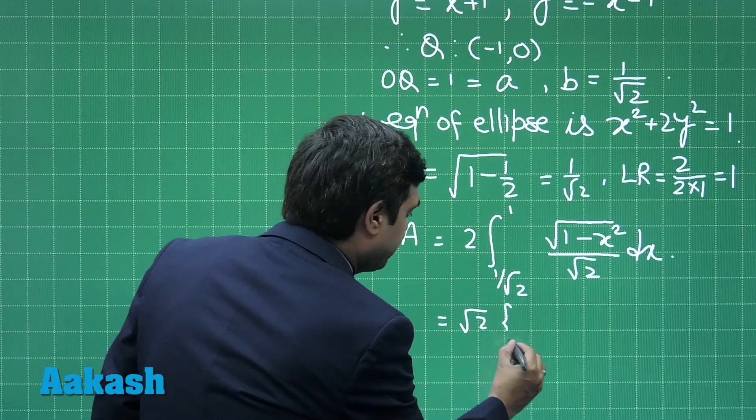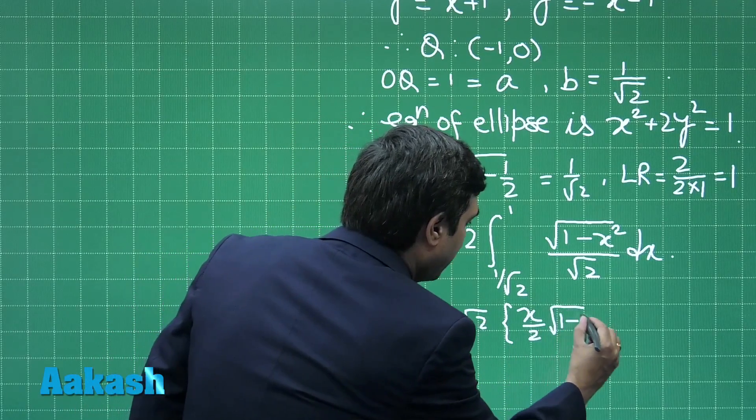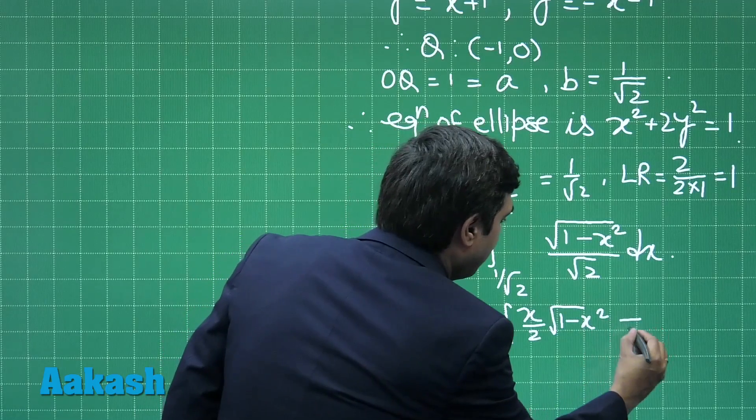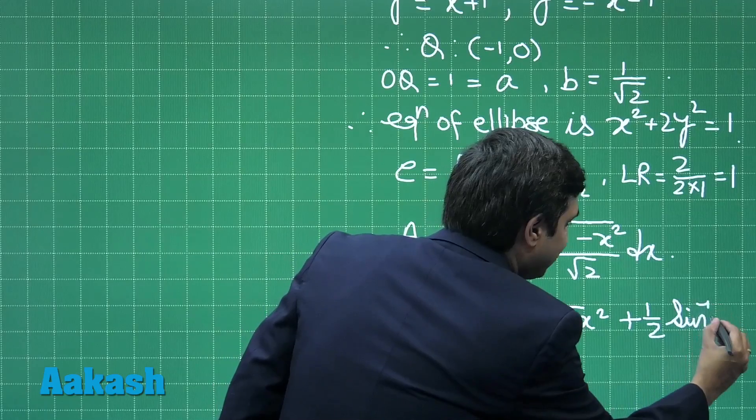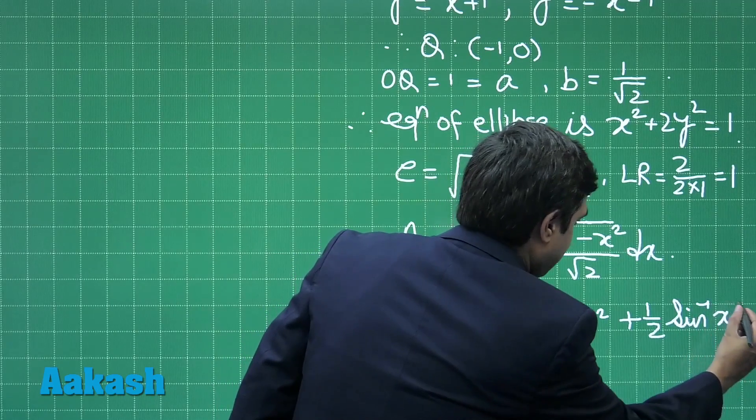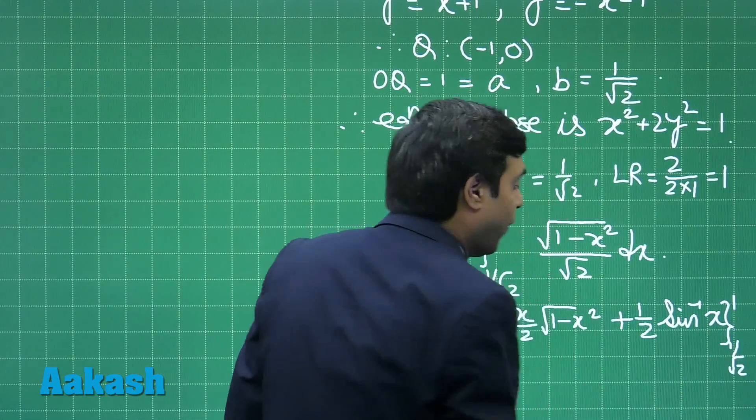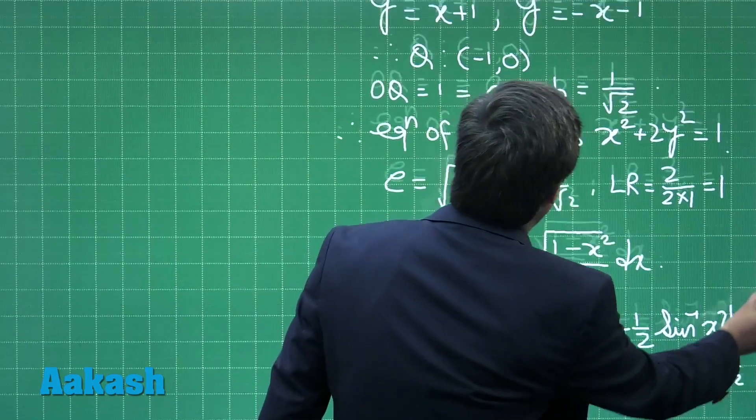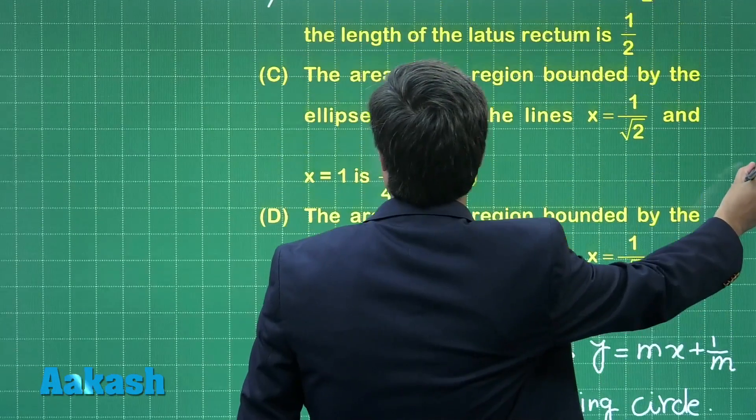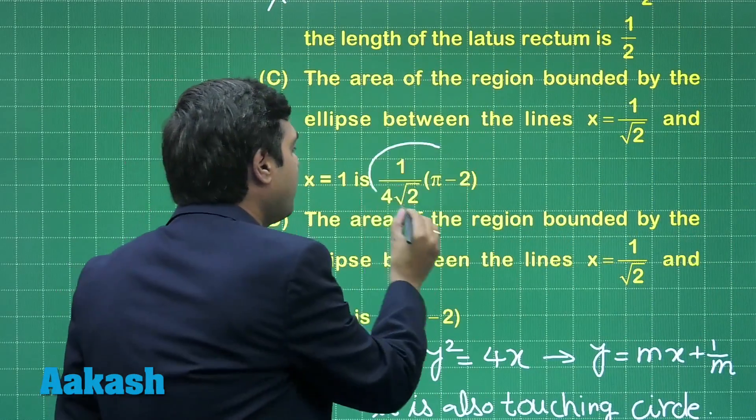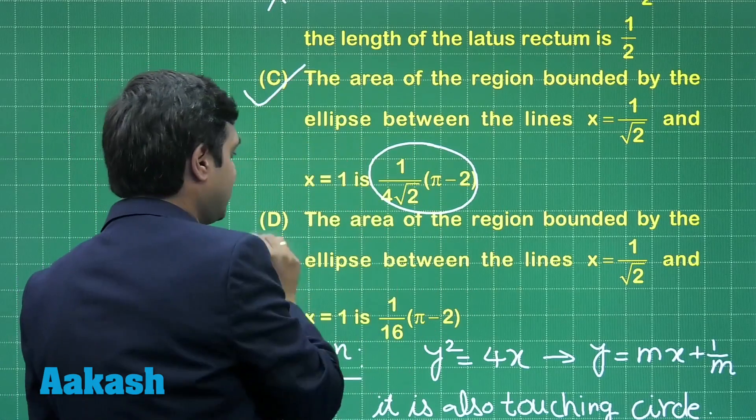Just simplify to get the required area. So it is √2 times [x/2 √(1 - x²) + 1/2 sin⁻¹(x)] under the limit 1/√2 to 1. Just substitute the limit to get the required answer and we observe that the correct answer for this question, the area comes as 1/(4√2)(π - 2), that is option C.